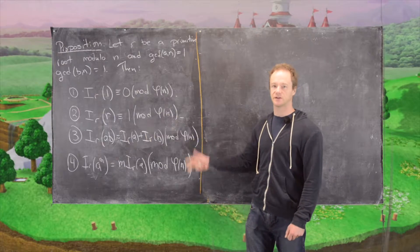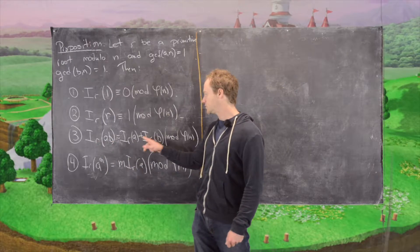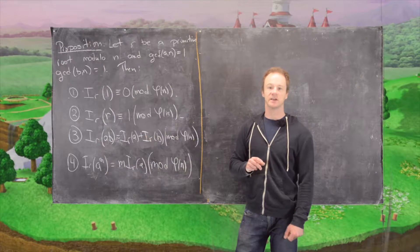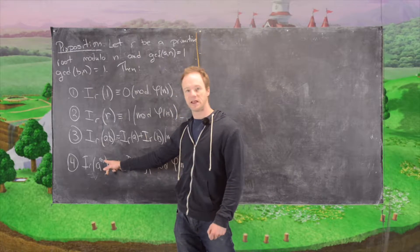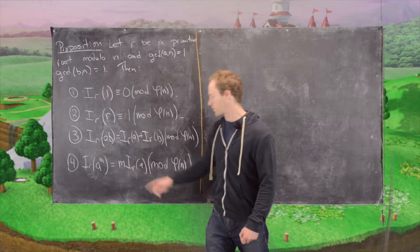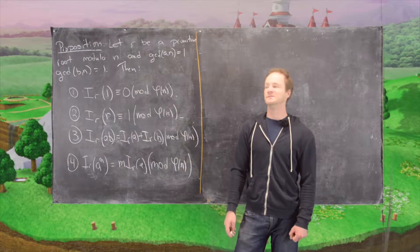So now we'll focus on these two. If you have a product inside an index, that turns into a sum outside of the index. So that should look like a logarithm rule. And then if you have an exponent inside the index, that turns into a product outside the index. Again, that should look like a logarithm rule.